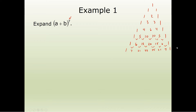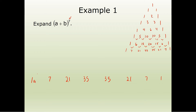So our coefficients are going to be one, seven, twenty-one, thirty-five, thirty-five, twenty-one, seven, and one. Remember, we start with A at that power and start going down: A to the seventh, A to the sixth, A to the fifth, A to the fourth, A to the third, A squared, A to the first, and then A to the zero. For B, we start with none and rise to seven: B to the zero, B to the one, B to the two, B to the three, B to the four, B to the five, B to the sixth, and B to the seventh.